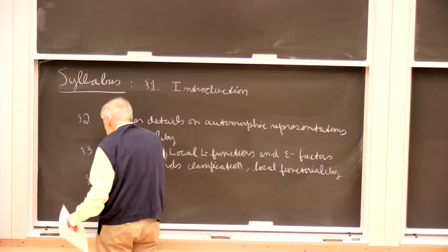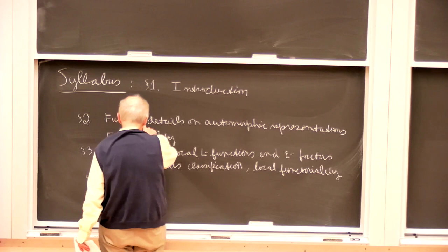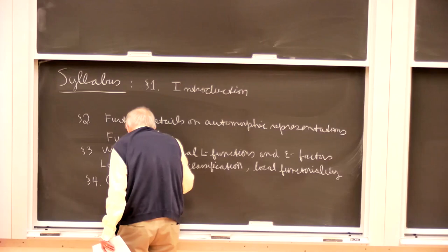Very closely related to the local Langlands classification is local functoriality. A fourth section would cover global functoriality, thinking about it in the context of the local things we'd be talking about.